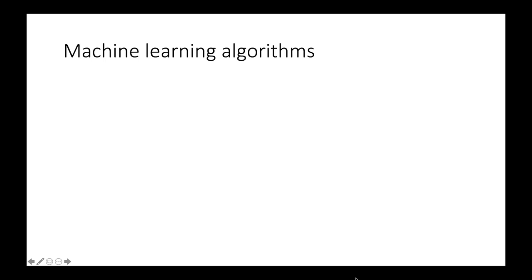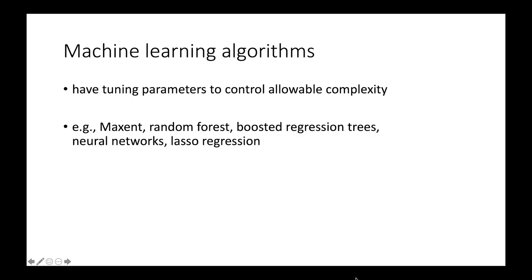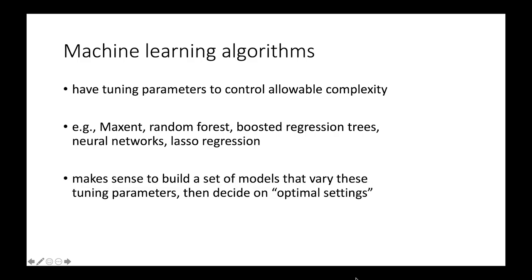So this brings us to machine learning algorithms. These are complex algorithms that have tuning parameters that allow you to control how complex the model can get. You can make a very simple model with a machine learning algorithm, or you can make a very complex one. It just depends on the tuning parameters that you set it with. Some examples are Maxent, Random Forest, Boosted Regression Trees, Neural Networks, Lasso Regression, things that use regularization. When you're using these things, it makes sense to build a set of models that vary these tuning parameters and then decide on optimal settings among them.